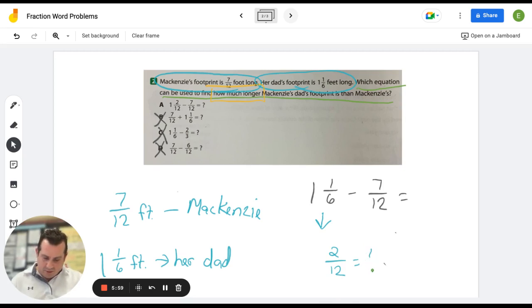I'm going to show it the other way around. Is one-sixth equal to two-twelfths? Well, let me check. Six times two gives me twelve, and one times two gives me two. So, it does. So, I can see that one and one-sixths is equivalent to one and two-twelfths, and I would subtract seven-twelfths. So, my answer is going to be A.